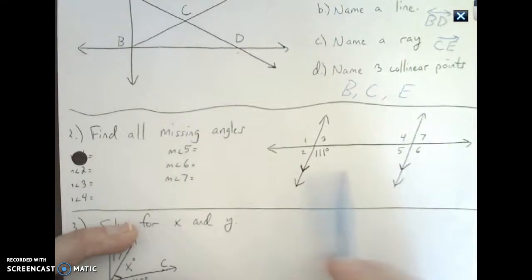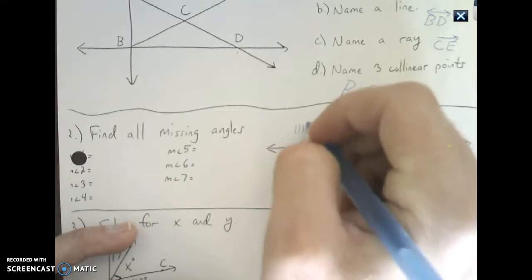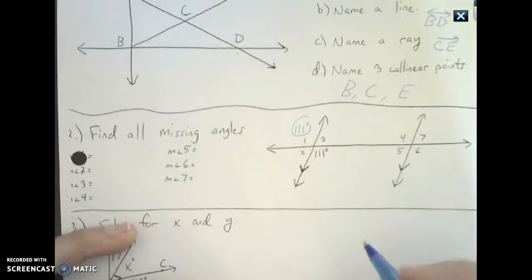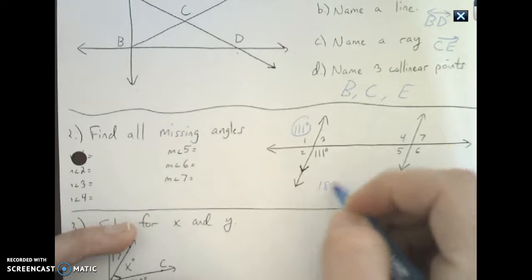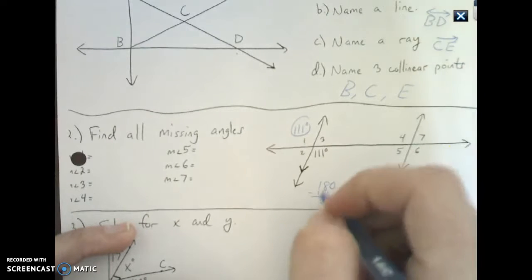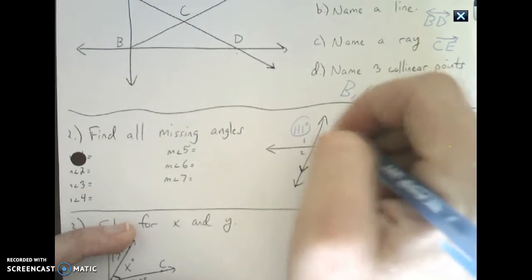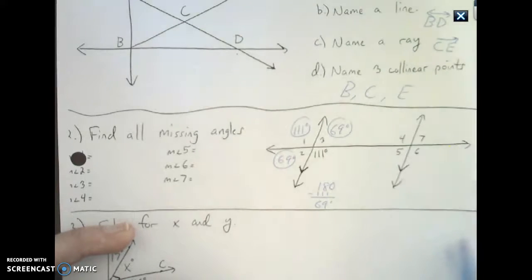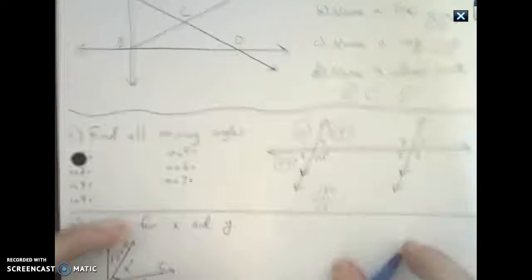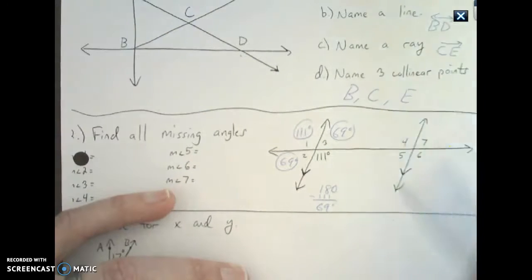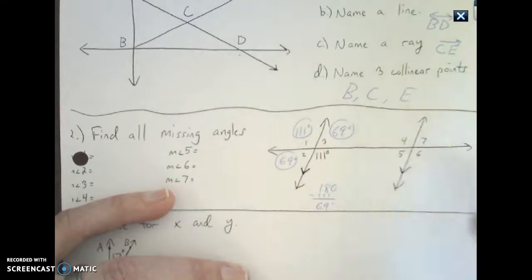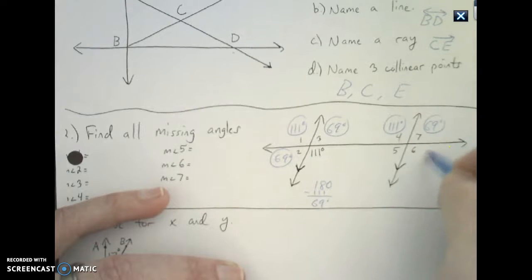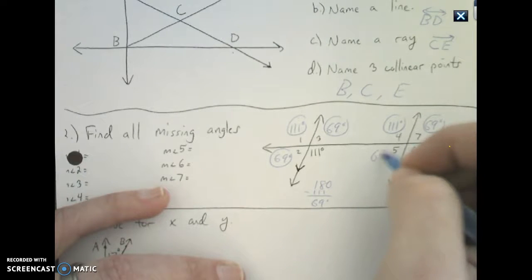Find all the missing angles. If this is 111, that's 111. Now to find over here, 180 minus 111 gives you 69, which means this is 69 degrees, that's 69 degrees. I could pick that up and I could move that all the way over here.